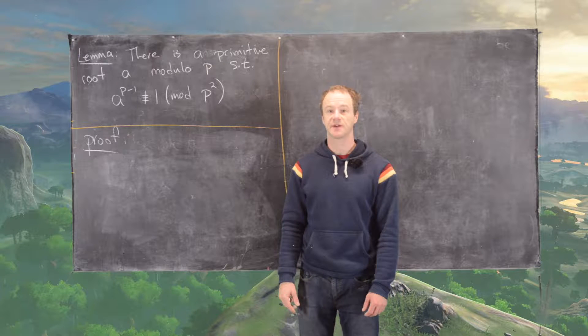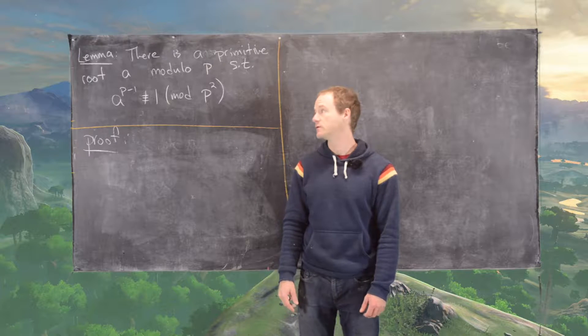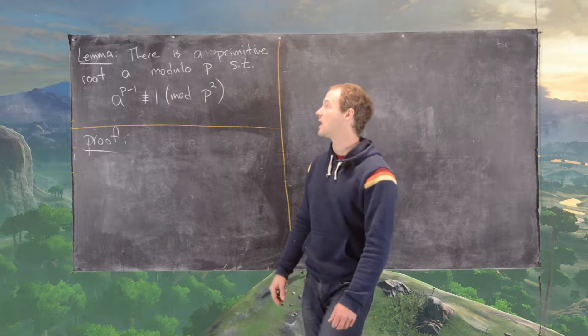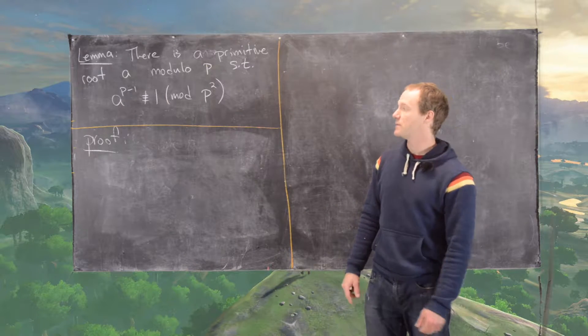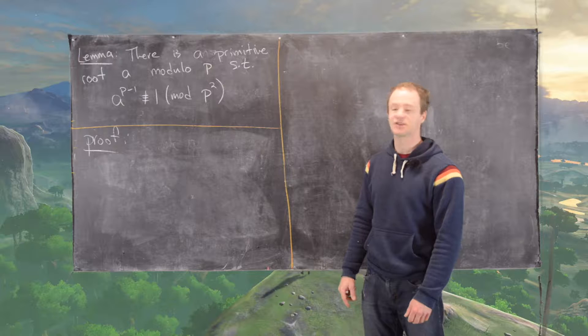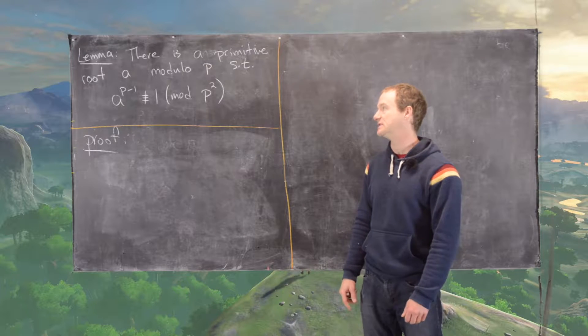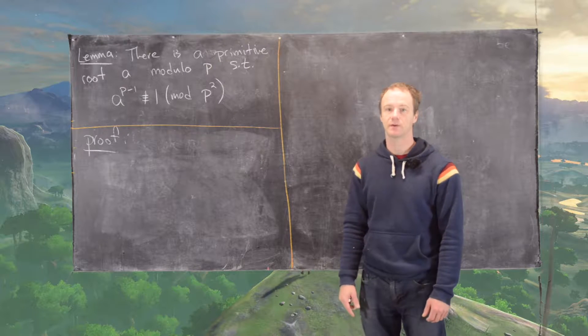Continuing on our goal of classifying the natural numbers that have primitive roots and those that don't, we need the following lemma. There is a primitive root a modulo p such that a to the p minus one is not congruent to one mod p squared.